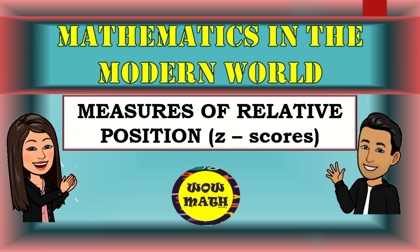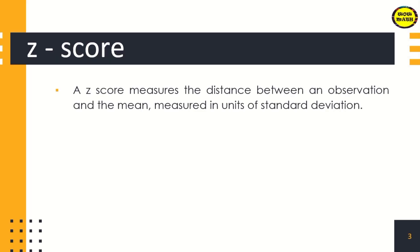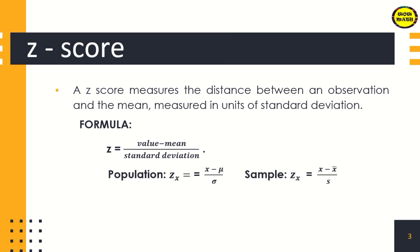Good day everyone. In this video lesson we are going to discuss measures of relative position, especially z-scores. A z-score measures the distance between an observation and the mean, measured in units of standard deviation. We're going to use this formula: value minus the mean, all over the standard deviation. For population data, we use z = (x − μ) / σ, and for sample data, x minus the mean over the standard deviation.